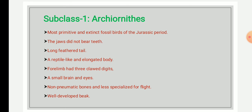In Archaeornithes, the forelimbs had three clawed digits. They had a small brain and eyes. The bones are non-pneumatic — unlike modern birds where bones are hollow (pneumatic), here the bones are filled with bone marrow — making them less specialized for flight.